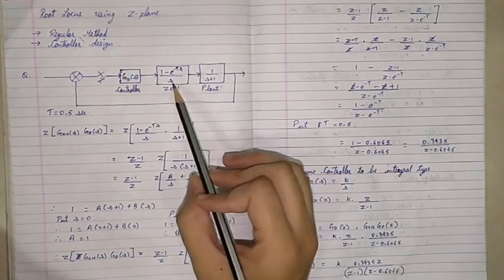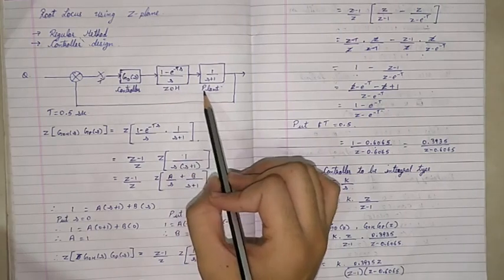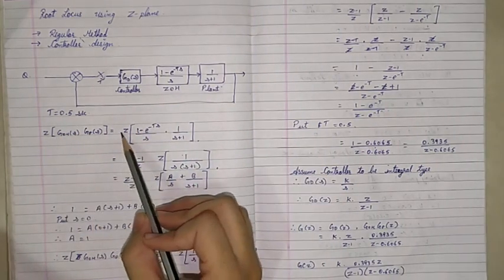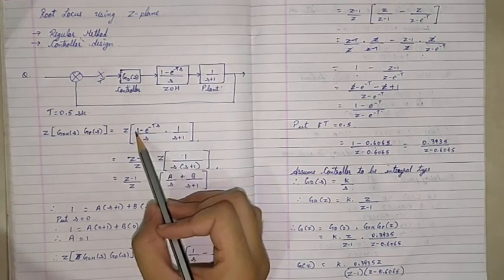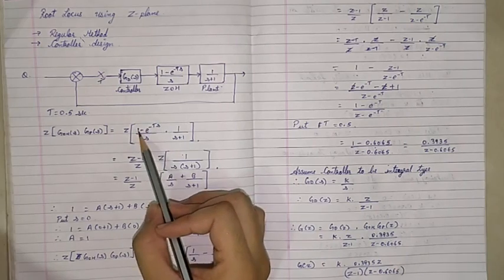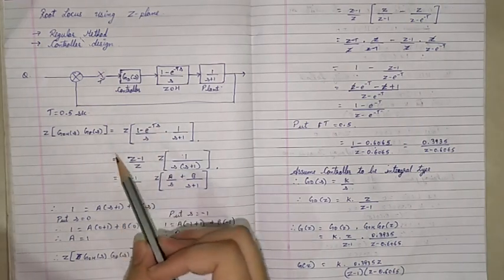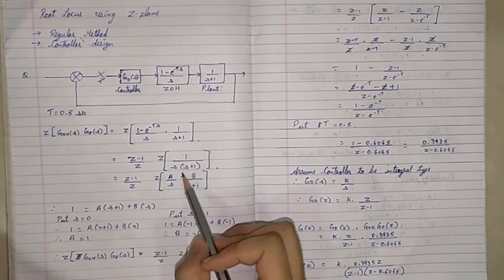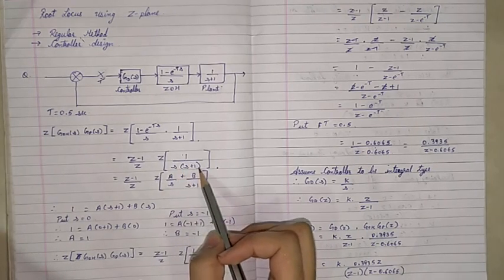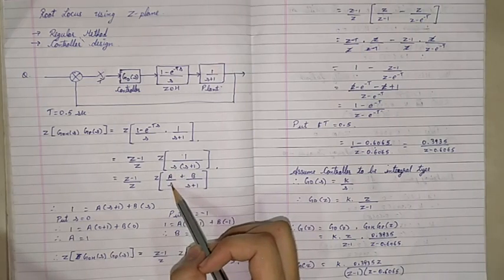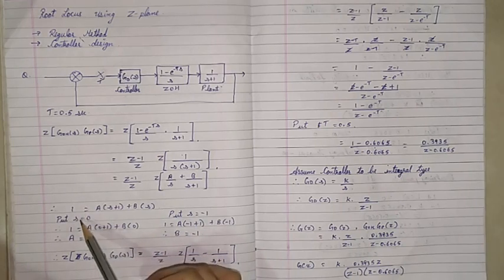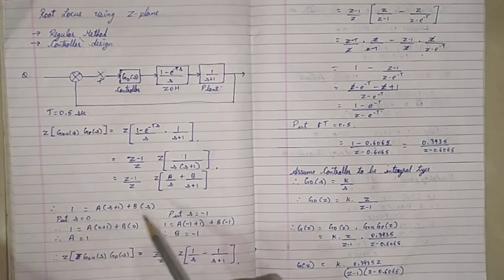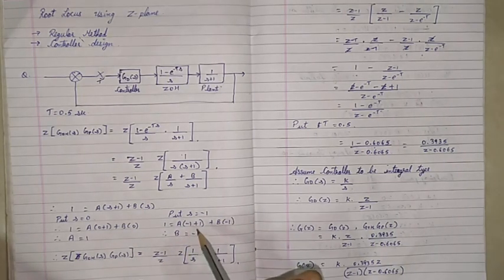What we can do is multiply ZOH and plant together, find its Z transform, then separately find the Z transform for the controller and multiply the two terms. So first let us find the Z transform for the combination of ZOH and plant. We have Z of (1 minus e raised to minus TS) upon S, multiplied by 1 upon (S plus 1). We take the Z transform of (1 minus e raised to minus TS) as (Z minus 1) upon Z, and take a partial fraction of 1 upon S(S plus 1), which gives A upon S plus B upon (S plus 1).